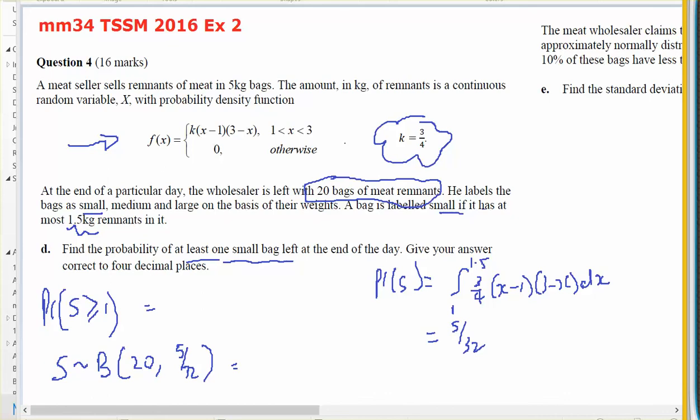My lower is 1, my upper is 20. I've got 20 bags. So N is 20. And the probability of success is 5 on 32.